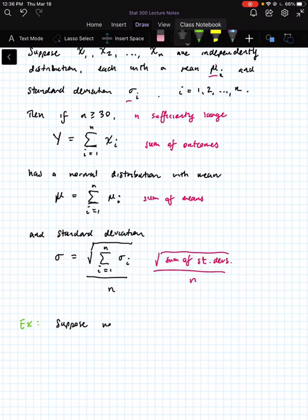So, as an example, suppose we have 30 binomial random variables.